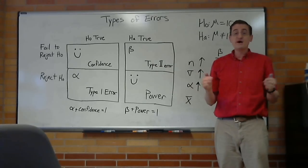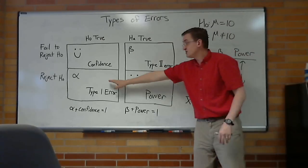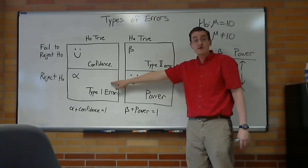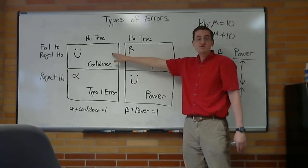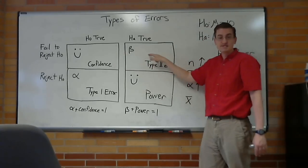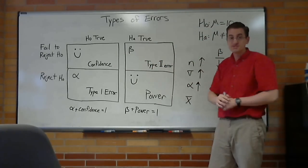And that's why we never set our alpha to zero. Zero sounds good, because you'll never make a type 1 error. What you're saying is, I'm going to fail to reject no matter what the data says. Well, you're running the serious risk of a type 2 error.